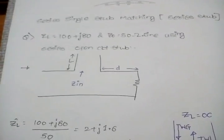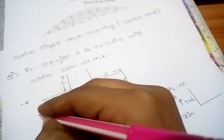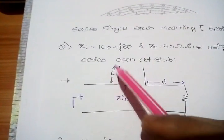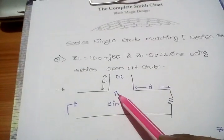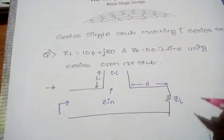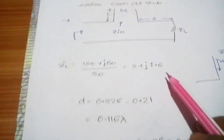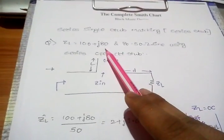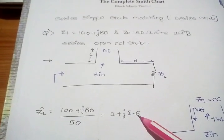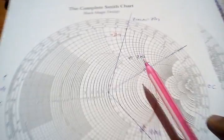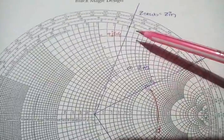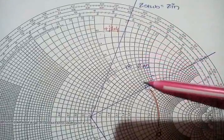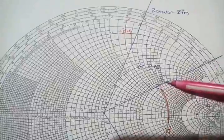So keeping that in mind we start the problem. I have drawn a simple circuit model with the input, the stub impedance, distance d, and the load ZL. First we normalize: normalizing 100 + j80 by 50, I get 2 + j1.6. So I plot that point on the Smith chart — this is 2 on the real axis and 1.6 on the imaginary axis. I name this point ZL.